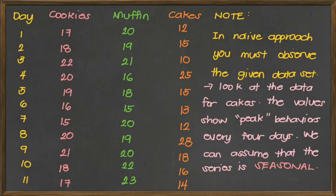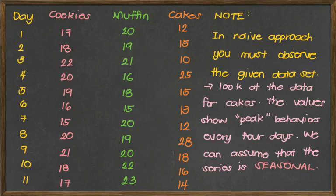For the last product, cakes, you can observe that merong mga instances na lumalaki yung value, which can be noted on day 4 where they have 25 dozens, and then on day 8, may 28 siya. We can clearly say na nagpipick yung kanyang orders every 4 days — from days 1 to 3 parang normal yung value, and then sa day 4 biglang tumaas, then bumaba ulit, and on day 8 biglang tumaas na naman. Nasa line of 2 yung values natin, kaya seasonal yung ating series.